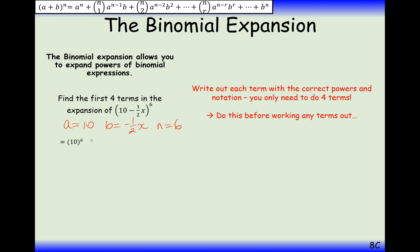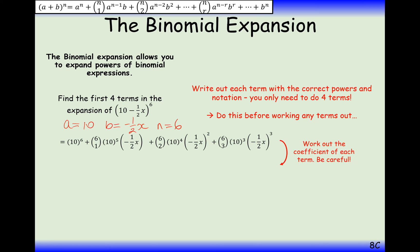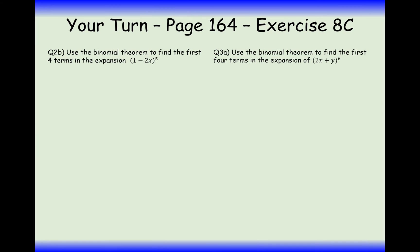The first term is 10 to the power of 6. Then 6 choose 1 times 10 to the power of 5 times (minus one-half x). Then 6 choose 2 times 10 to the power of 4 times (minus one-half x) squared. The fourth term is 6 choose 3 times 10 cubed times (minus one-half x) cubed. Be really careful squaring and cubing the negative half. The result is 1,000,000 minus 300,000x plus 37,500x squared minus 2,500x cubed.